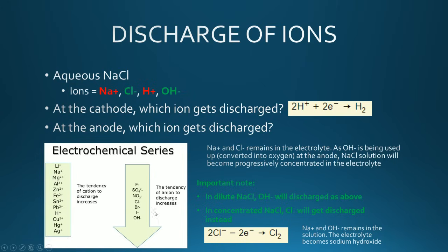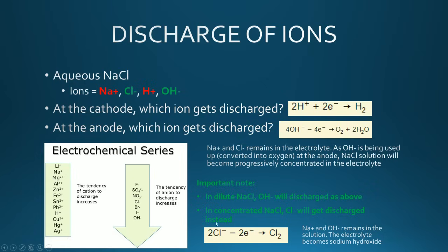Same thing with the anode: because the hydroxide ions are lower down on the list compared to the chloride ions, you actually get the hydroxide ions forming oxygen at the anode. That means sodium ions and chloride ions remain in the electrolyte solution. Because the hydroxide and hydrogen ions are being used up, the sodium chloride solution will become progressively more concentrated throughout electrolysis. However, if Cambridge specifies a concentrated sodium chloride solution, it will in fact be chloride ions that get discharged instead of the hydroxide ions, simply because there are a lot more chloride ions in the solution.